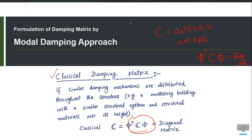Just like φᵀMφ is a diagonal matrix and φᵀKφ is a diagonal matrix, this product φᵀCφ is also diagonal. That means we can still have an uncoupled equation of motion for any i-th single degree of freedom system or any i-th mode.